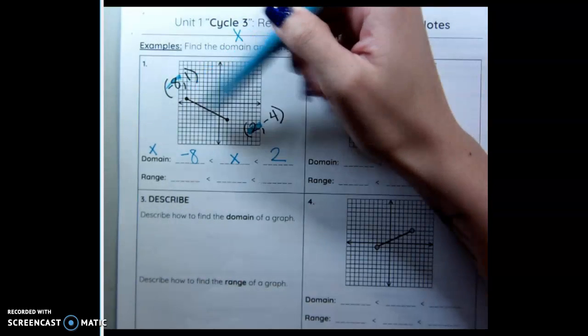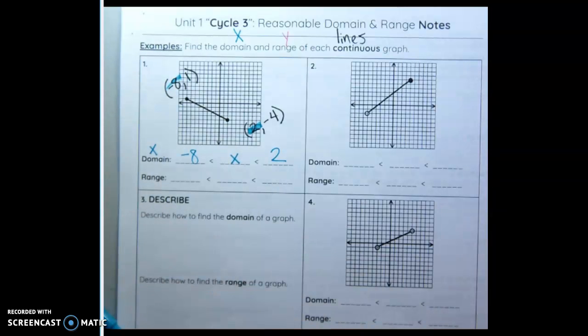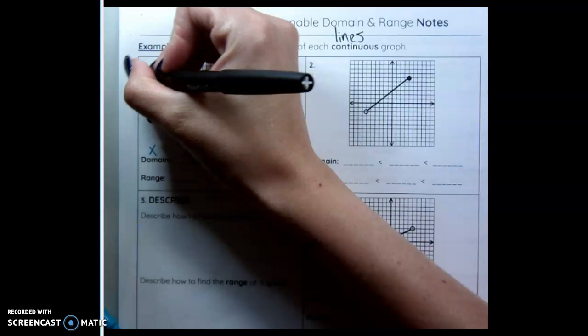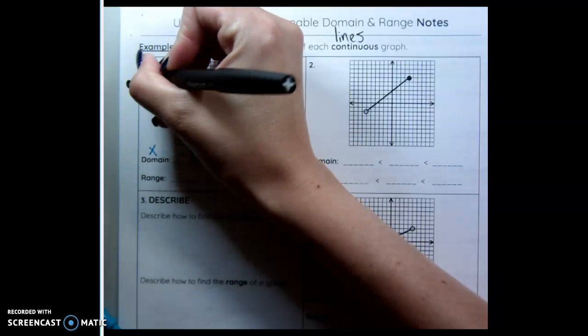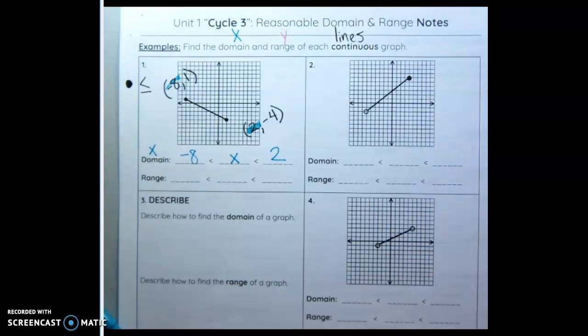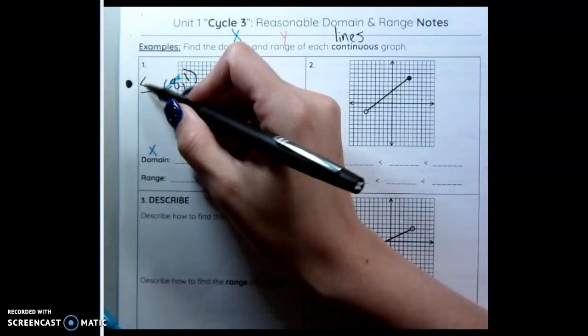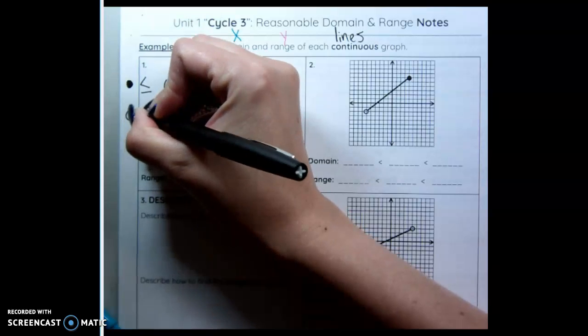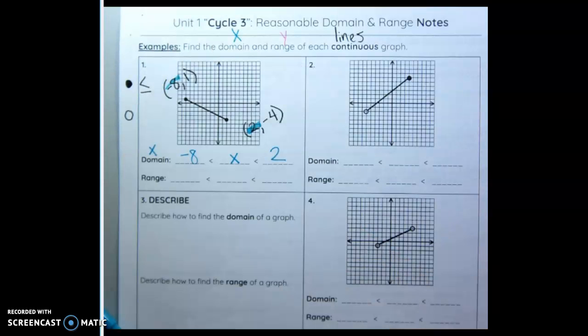The other thing we need to talk about is our dot. If our dot is closed, that means it can include that value. Which means your mom is like, I can give you $15 to spend at Six Flags and I don't need any change back. So that means less than or equal to. If it's open, it's your mom telling you you have $15 to spend. Don't spend it all. And you spend $14.99. So that would be less than without equal to.